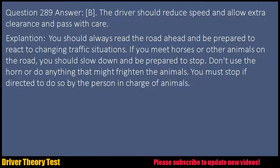Question 289 Answer: B. The driver should reduce speed and allow extra clearance and pass with care. Explanation: You should always read the road ahead and be prepared to react to changing traffic situations. If you meet horses or other animals on the road, you should slow down and be prepared to stop. Don't use the horn or do anything that might frighten the animals. You must stop if directed to do so by the person in charge of animals.